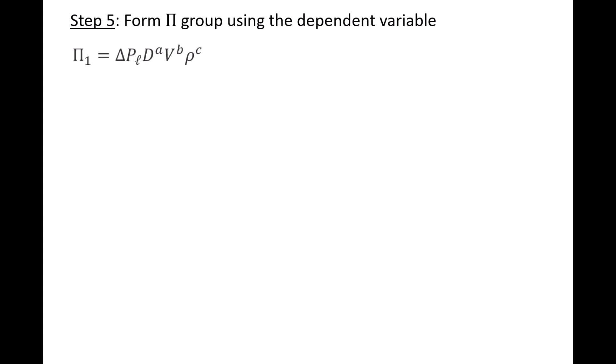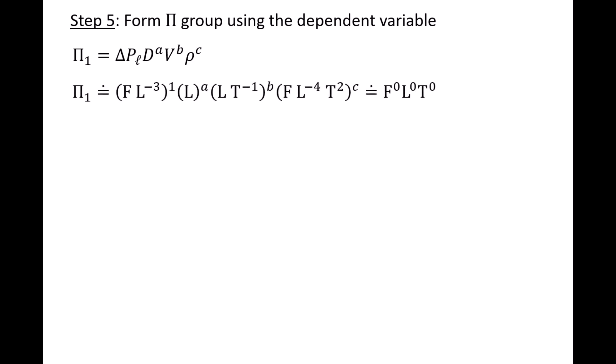We are now ready to create our first pi group in step 5. This pi group involves our dependent variable delta PL. We multiply delta PL by the three repeating variables raised to an unknown power: pi 1 equals delta PL times d to the a, v to the b, rho to the c. The exponents a, b, and c are unknown, and our task is to find the values that will make pi 1 dimensionless. We insert the FLT dimensions: delta PL has dimensions of force per length cubed, d has dimensions of length, v has dimensions of length per time, and rho has dimensions of force, length to the negative 4, time squared. We want to find the values of a, b, and c that result in force, length, and time all raised to the power of 0.